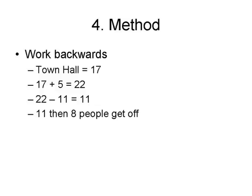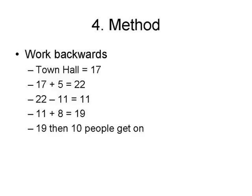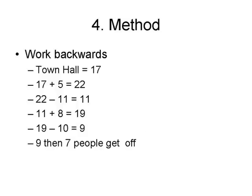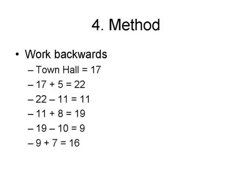Just before that, eight people get off, so I have to reverse the operator again. So 11 plus eight equals 19. And then just before that, ten people get on. Getting on is a positive, so I have to subtract ten. So 19 minus ten equals nine. And then just before that, seven people get off. Getting off is a negative, so I have to do the opposite — I have to add it. Nine plus seven equals 16.